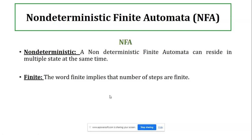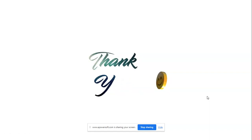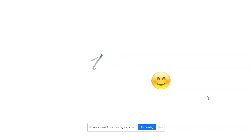NFA stands for Non-Deterministic Finite Automata. The word 'non-deterministic' means the finite automaton can reside in multiple states at the same time, since we cannot easily determine which state the machine transitions to from the current state on the current input symbol — there may be two or three different possible states for a given input. The meaning of 'finite' remains the same: the number of states is finite. So here we have finished with today's introduction to finite automata. In the next session, we will cover the introduction to DFA in detail with lots of examples. Thank you so much.